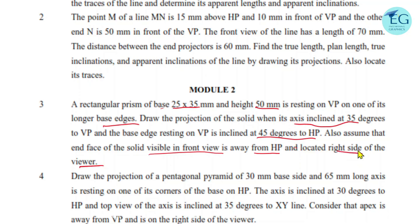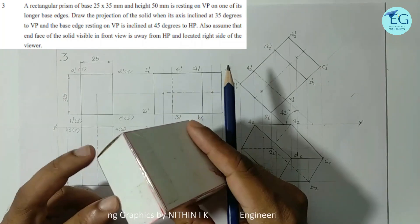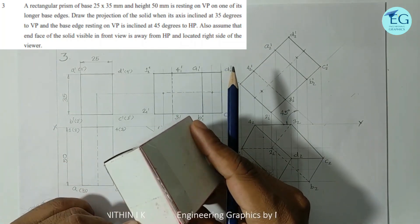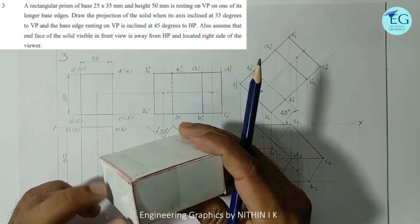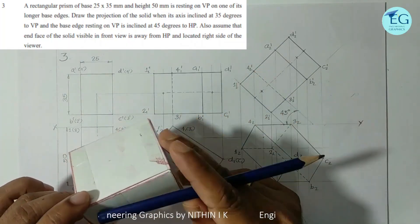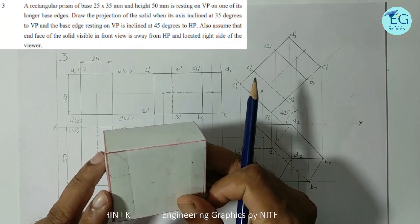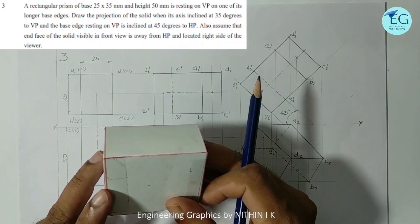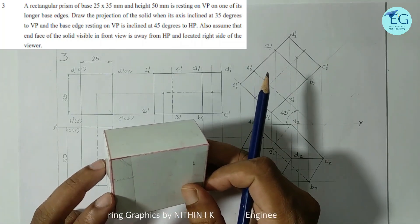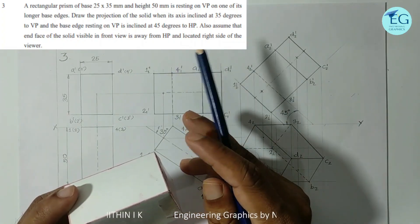The rectangular prism edge in VP is given in the problem. The rectangular prism has three dimensions: the base is 25×35, where the longer edge is 35mm and the shorter edge is 25mm, and the height is 50mm. Usually a prism problem involves resting on base edges or resting on a corner. Here it is resting on one of its longer base edges.